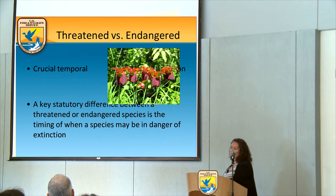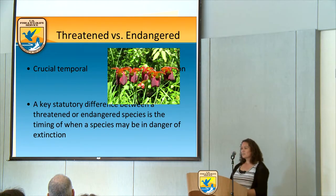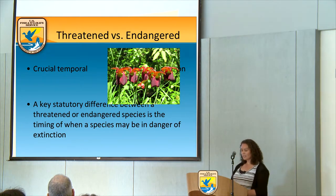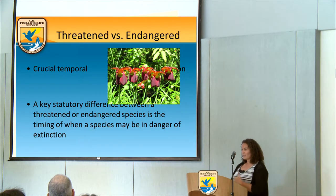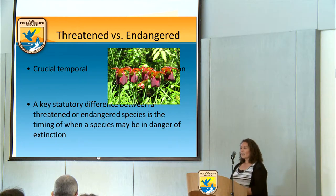The distinction between threatened and endangered species undergoes a lot of debate, but our solicitors define it as a crucial temporal distinction: either the endangerment is now and it's endangered, or being extinct is in the future and that's threatened.